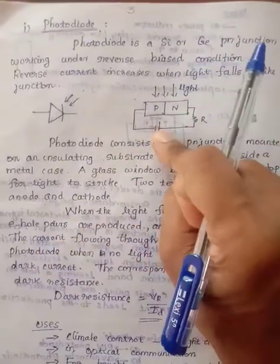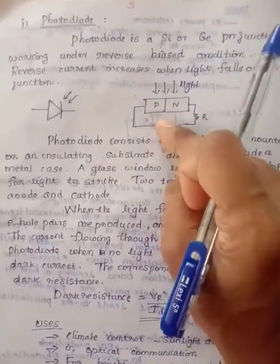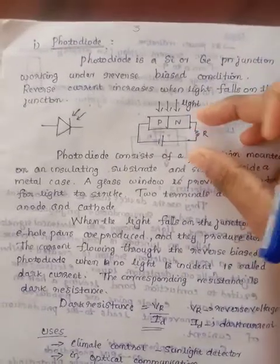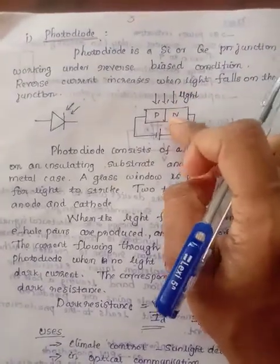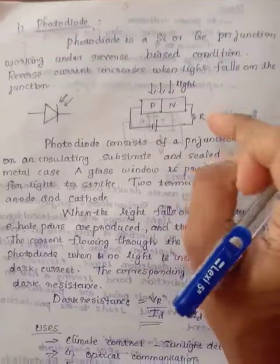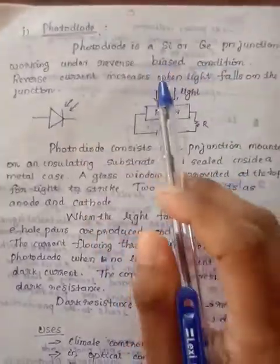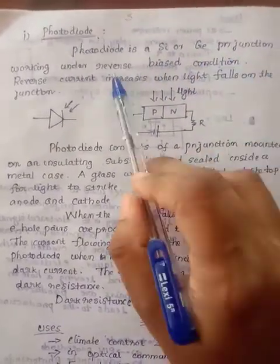This is the reverse biased condition — positive to negative and negative to positive. A resistance is placed in this circuit. It is commonly a germanium PN junction diode.